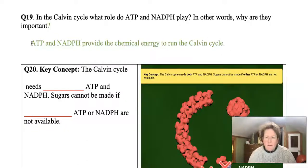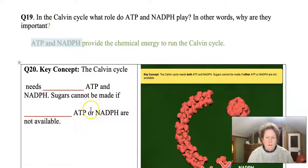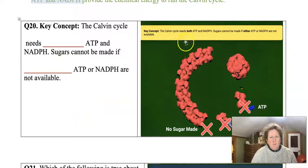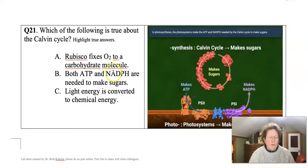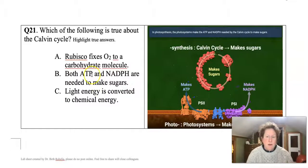The Calvin Cycle isn't directly light dependent. It does rely on light indirectly because it needs those ATP and NADPH molecules, but it's not directly dependent on light — it's directly dependent on ATP and NADPH to power the cycle. Both ATP and NADPH are needed to make sugars. And rubisco fixes carbon to a carbohydrate molecule.